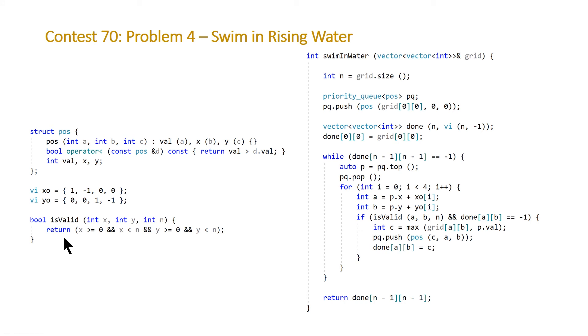So if we come to our function now, we're just storing n so that we don't need to type grid.size over and over again. We declare our priority queue with the template type being our struct and the first thing we do is we push on to it the top left element.